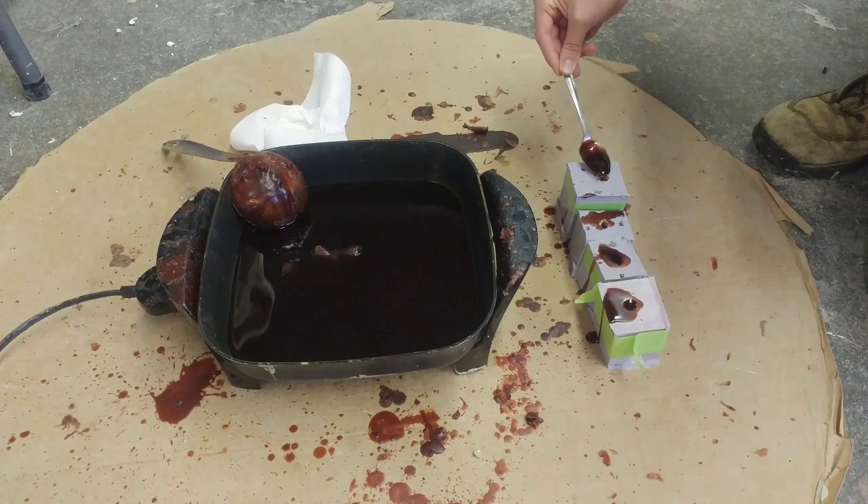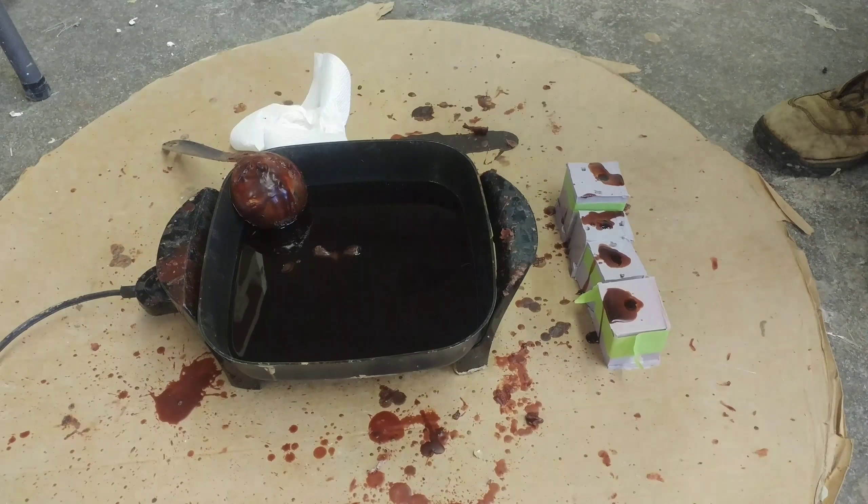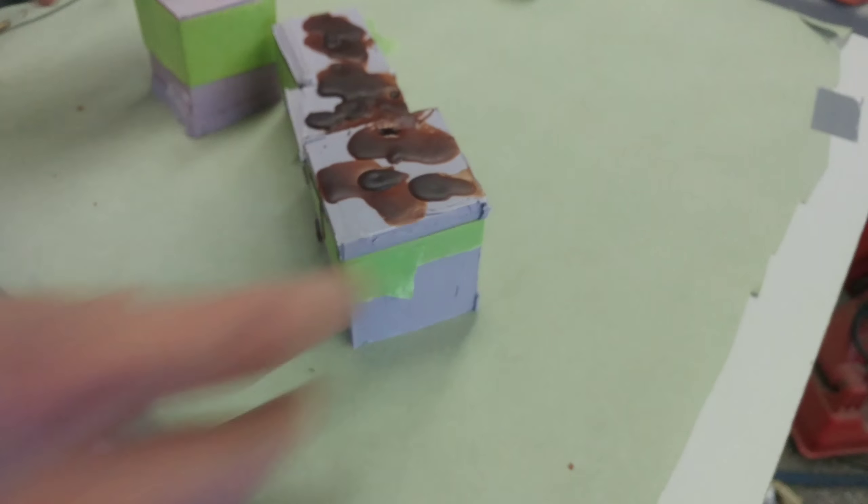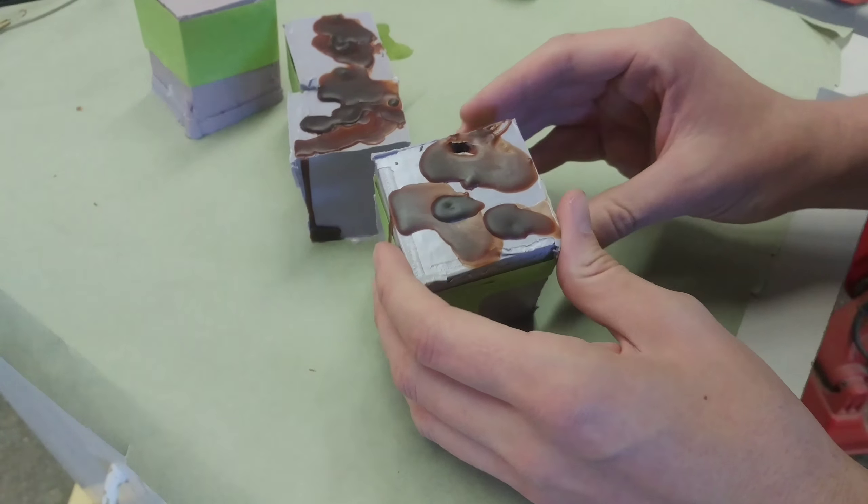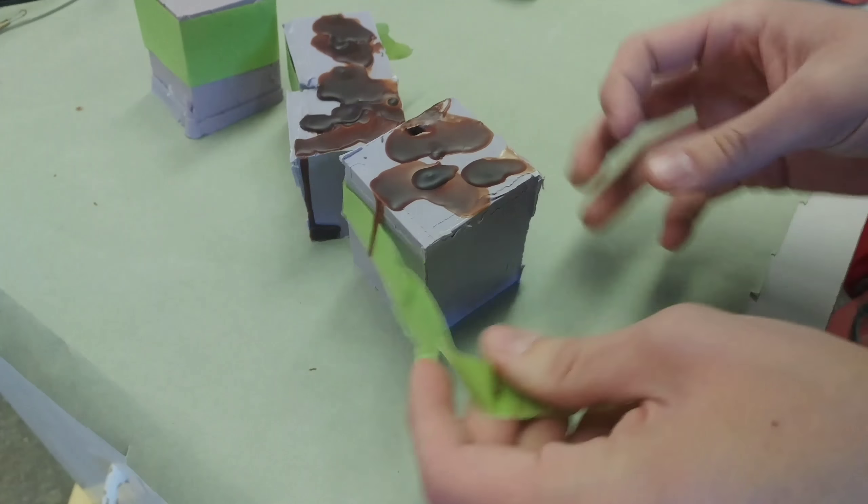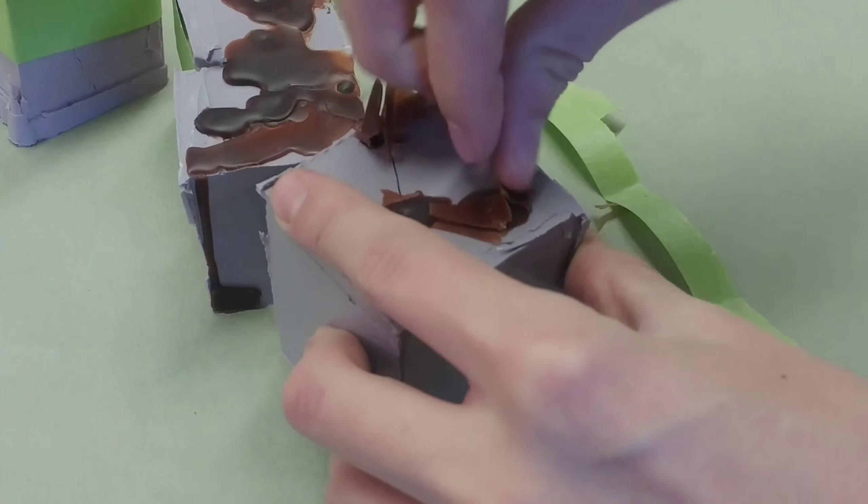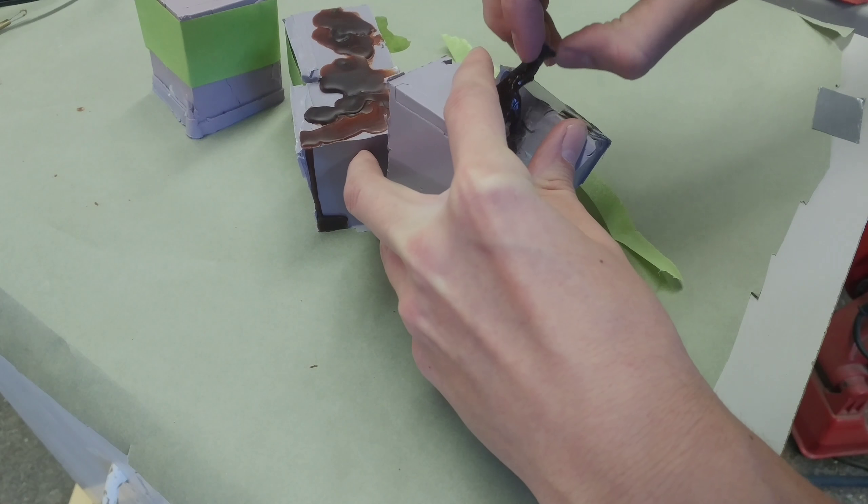Then once I fill all those molds up I may pour a little bit extra wax inside those sprues or air channels if they didn't already fill up. Then of course I let the wax cool and now it's time to see if those little air channels aka sprues worked to deliver air and wax to where it needed to go.